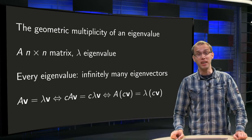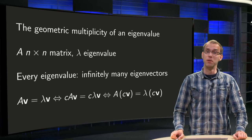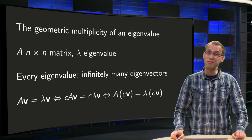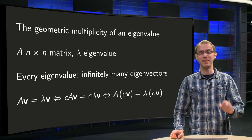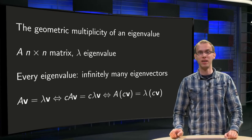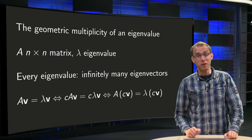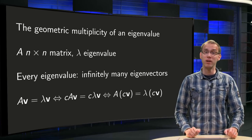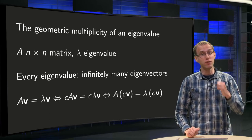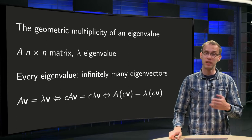Every eigenvalue has infinitely many eigenvectors, but only a finite number of independent eigenvectors. This number is called the geometric multiplicity of an eigenvalue, and in this video we will see how we can find it.